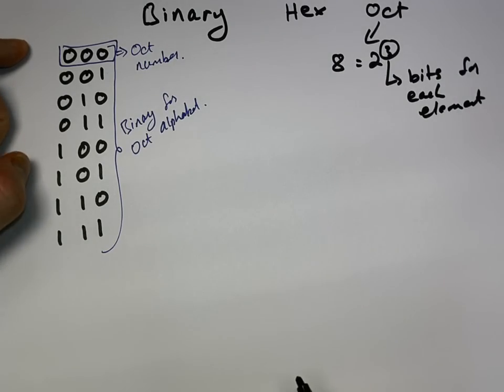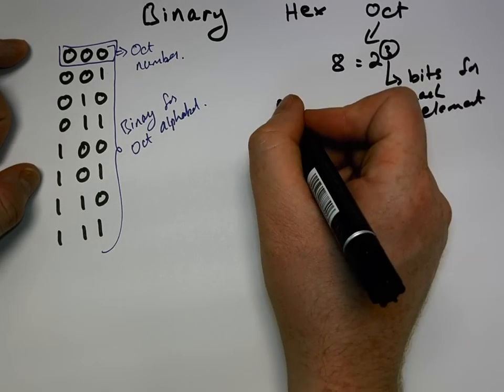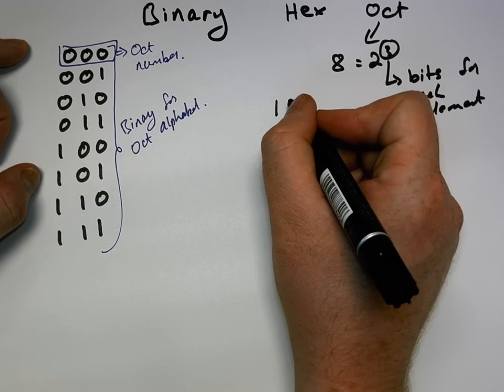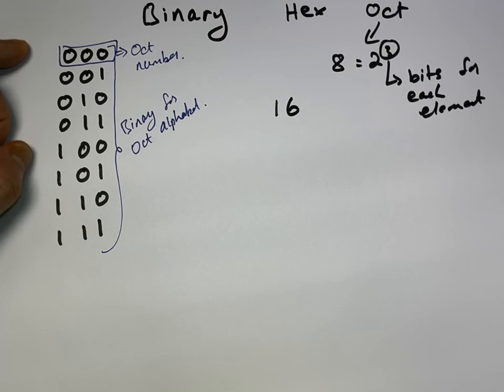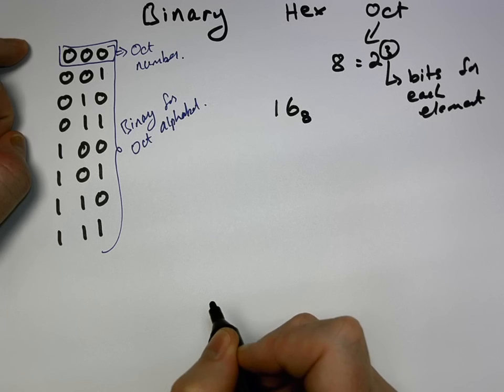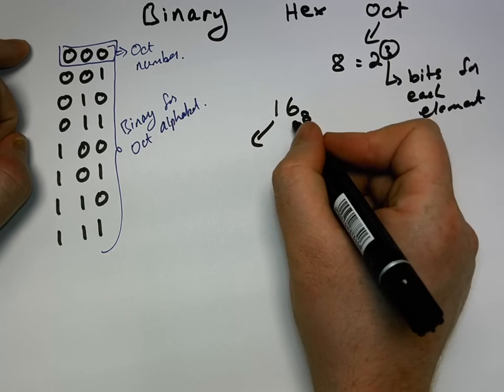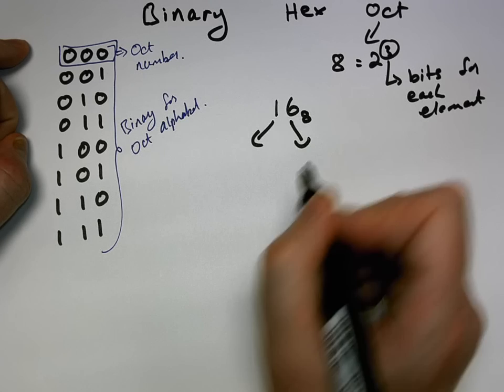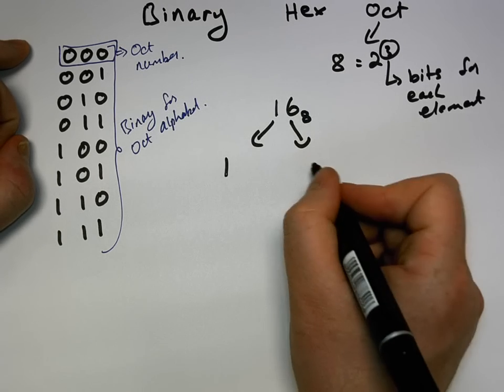So if we take any kind of octal number, for example, we take one, six. Just like we had the sixteen the last time, but this time it's sixteen base eight. Well, the process is quite similar. We break this down to two different numbers, so we have one and six.